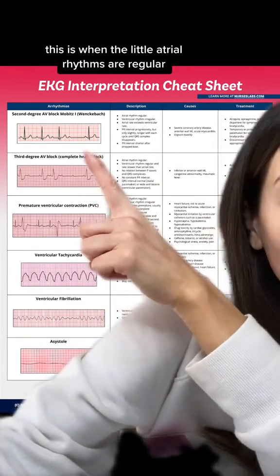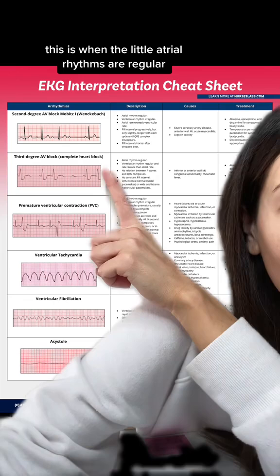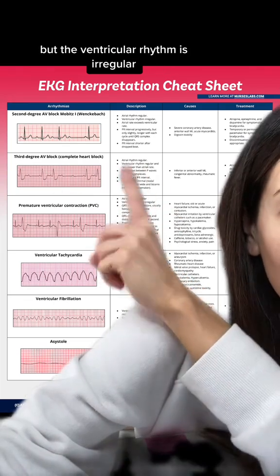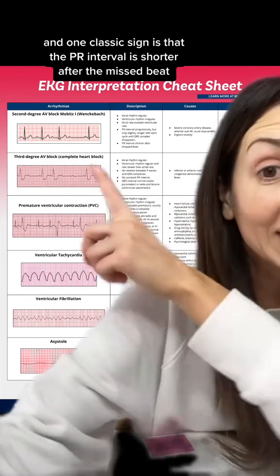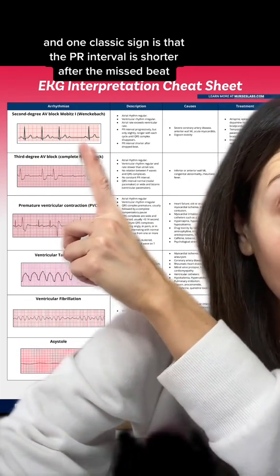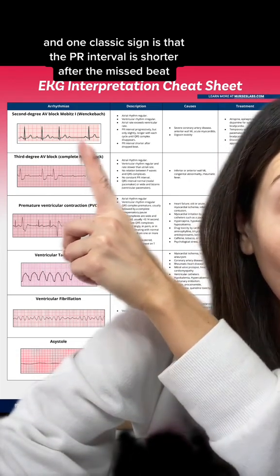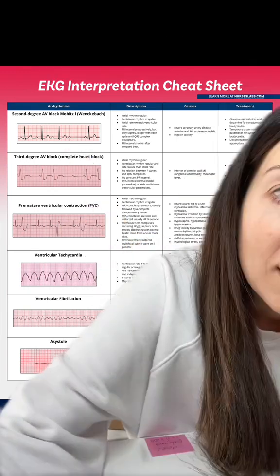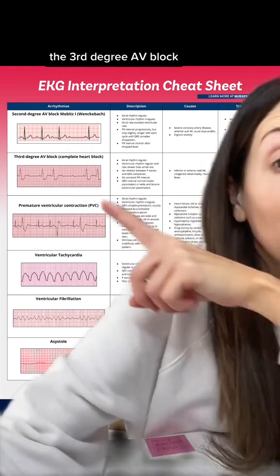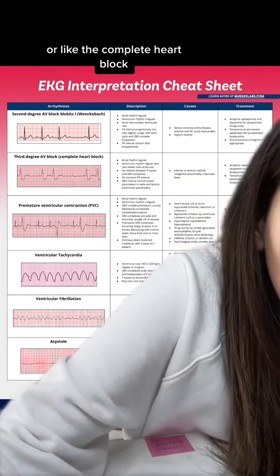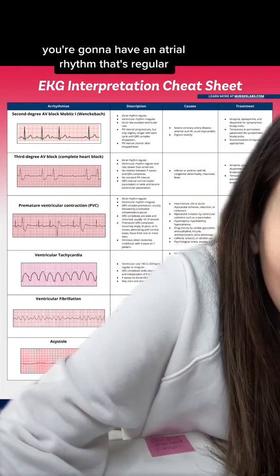Next is second degree AV block, or Wenckebach. The atrial rhythms are regular but the ventricular rhythm is irregular. One classic sign is that the PR interval is shorter after the missed beat.